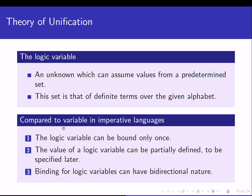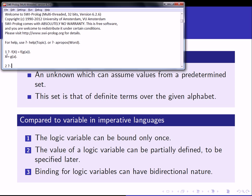If we compare the logic variable to variables in imperative languages like C, Pascal, or C++, the first difference is that a logic variable can be bound only once during a particular computation. So if in our example X is bound to the value g(a), then later in that same computation we cannot bind X to some different value.